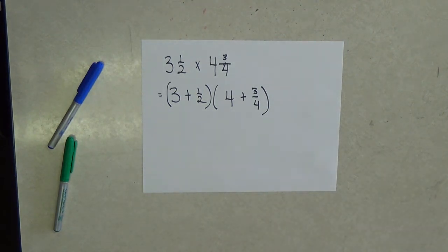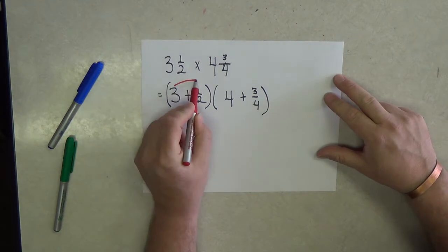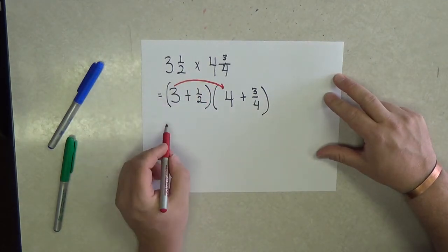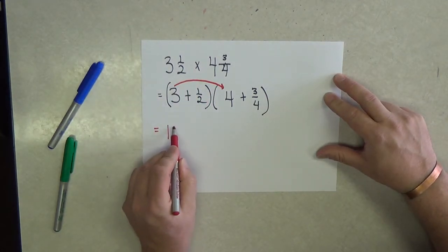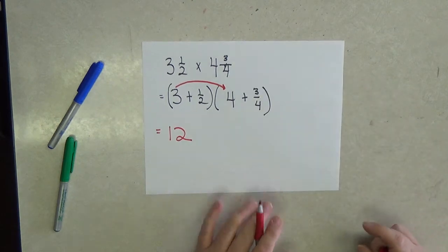Let's look at the fact and remember that we're going to have 4 partial products emerge from this. The first partial product is 3 times 4 and we know that 3 times 4 is 12.